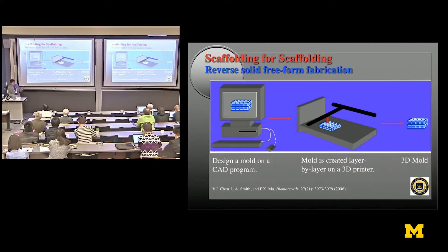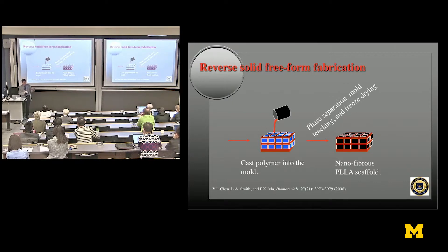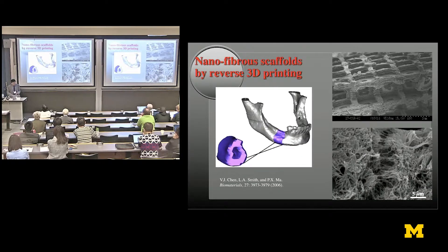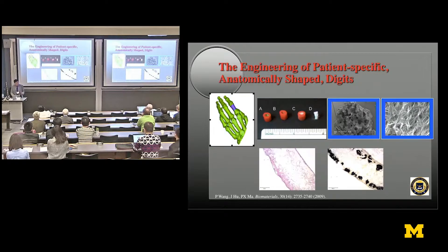We further developed a way to use 3D printing — computers can print any shape or size of structure. We design these structures, pour polymers into them, then dissolve away the initially printed materials to get an interconnected 3D structure that can be more complicated than spheres or channels. Now we can print them into any shape or size, making the geometry at the macroscale, the micropores, and the nanofibers all in one casting process. You can make ears, fingers — any shape.